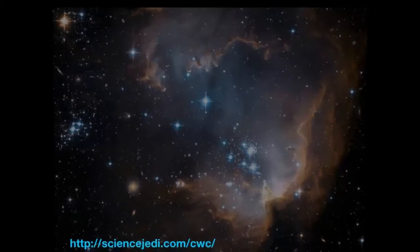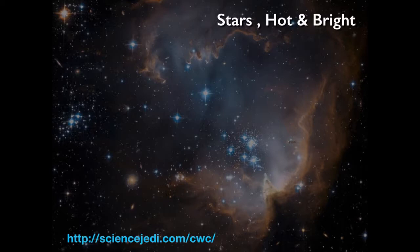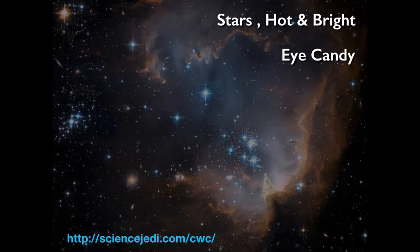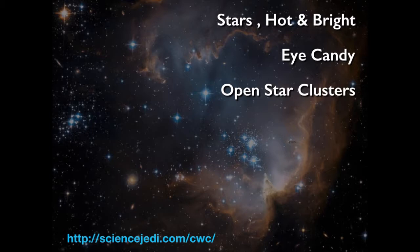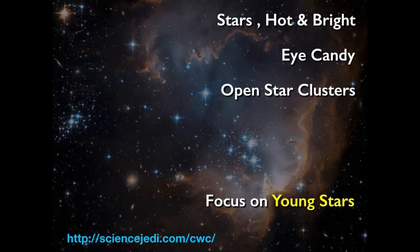Today we'll start talking about the things we can see — that the stars are hot and bright, and why they have the properties they do. In the middle somewhere we'll get to the eye candy, staring at pretty pictures and understanding why they reflect the physics we've been talking about. At the end we'll spend a little time talking about open star clusters, which are part of the beginning of the story of stellar evolution and the beginning of stars' lives.